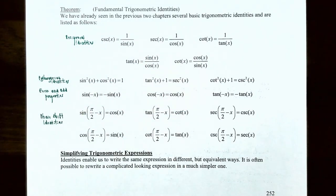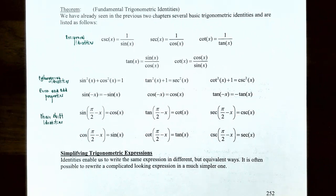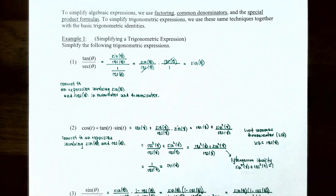Now that we have all the fundamental trigonometric identities, we're going to discuss how to simplify trigonometric expressions. Identities enable us to write the same expression in different but equivalent ways, often rewriting a complicated trigonometric expression in terms of a simpler one. To simplify algebraic expressions we use factoring, common denominators, and special product formulas — and we'll use those same techniques together with the basic trigonometric identities.